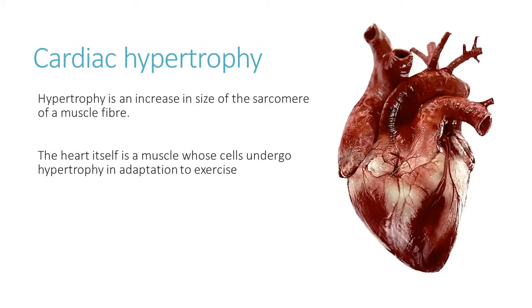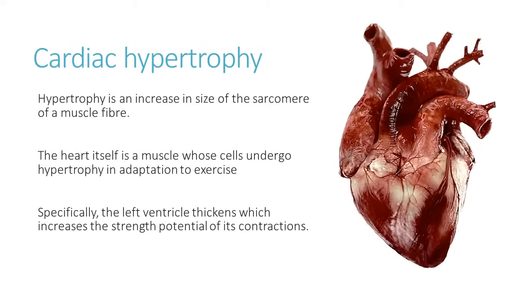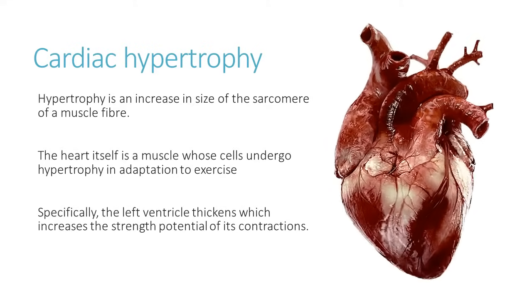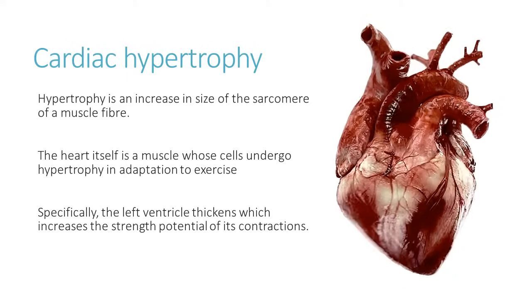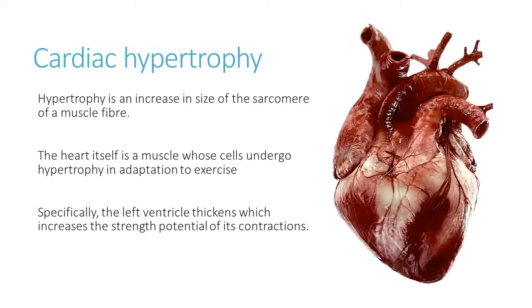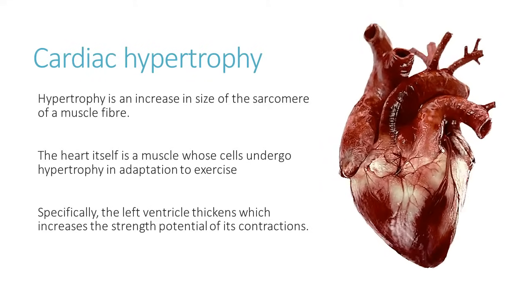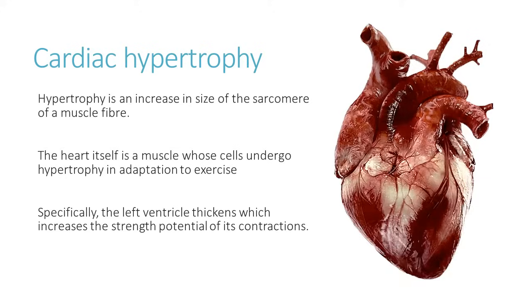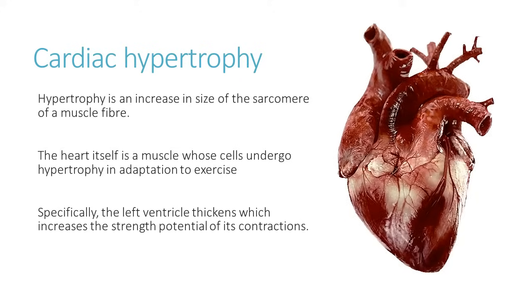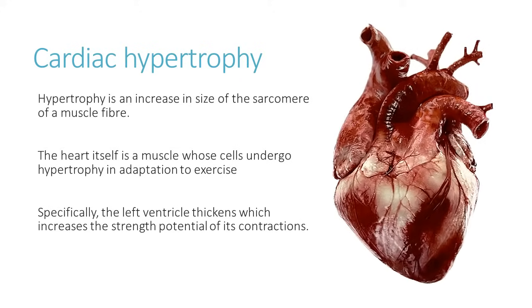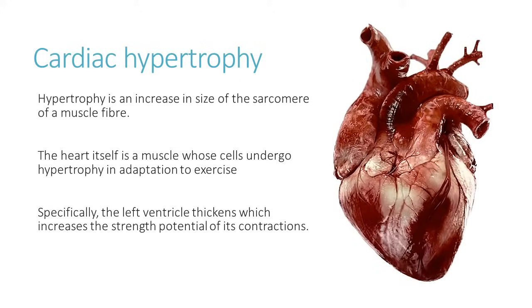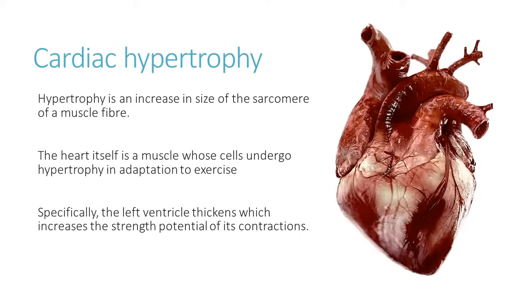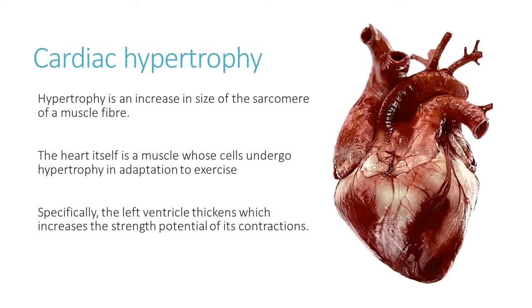Specifically, the left ventricle of the heart thickens because it is a muscle. When it contracts, it contracts more forcefully and recruits more muscle fibres when stimulated. In doing so, more blood can be ejected because a greater pressure can be created — more blood ejected out of the heart with a single beat.